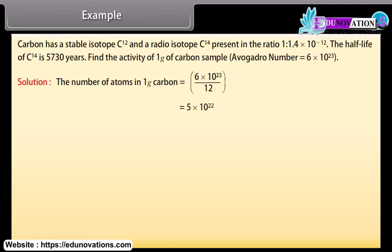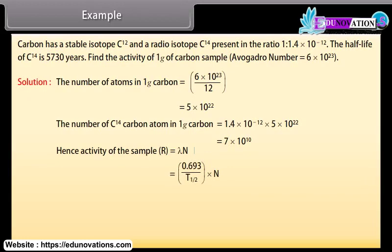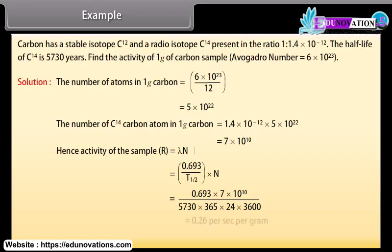The number of atoms in 1 gram of carbon = 5 × 10²². The number of Carbon-14 atoms in 1 gram of carbon = 1.4 × 10⁻¹² × 5 × 10²² = 7 × 10¹⁰. Hence, activity of the sample R = λ·N = (0.693 / T½) × N = (0.693 × 7 × 10¹⁰) / (5730 × 365 × 24 × 3600) ≈ 0.26 per second per gram, approximately 16 per minute per gram.